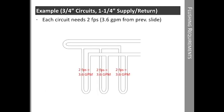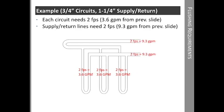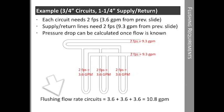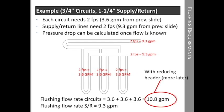Let's take a look at an example with a three circuit loop. Each circuit is piped in parallel. From the previous slide, we need 3.6 gallons per minute in each circuit. The inch and a quarter supply return lines need 9.3 gallons per minute to achieve 2 feet per second. Then we can compare flow rates to the circuits and the supply and return lines. In this case, we need 10.8 GPM to get 2 feet per second in all three circuits. Since the flow rate required for the circuits is higher than the flow rate required for the supply and return lines, the flushing flow rate is 10.8 GPM. This assumes a reducing header, which we'll talk about later.